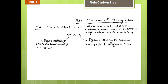Steel has a carbon content below 2%. If the carbon percentage is greater than 2%, it is called cast iron. Low carbon steel has less than 0.3% carbon; medium carbon steel has 0.3 to 0.5% carbon; and high carbon steel has greater than 0.5% but less than 2% carbon. In some textbooks, the boundary is 1.8%, but approximately 2% is used.